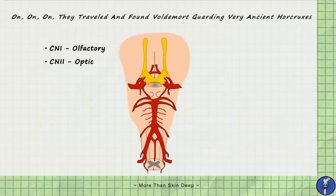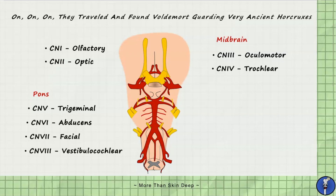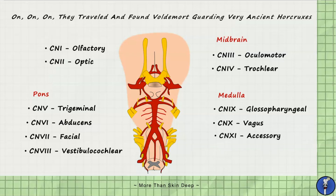Now let's review what we've covered so far. The olfactory and optic nerves don't originate from the brainstem. The midbrain gives rise to two cranial nerves: the oculomotor and trochlear nerves. The pons gives rise to four cranial nerves: the trigeminal, abducens, facial, and vestibulocochlear nerves. The medulla gives rise to the last four cranial nerves: the glossopharyngeal, vagus, accessory, and hypoglossal nerves. I like to remember the 2-4-4 rule: two cranial nerves come off the midbrain, four come off the pons, and four come from the medulla.